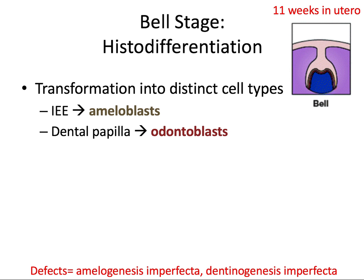Next we have the bell stage, which begins 11 weeks in utero, and there are two phases. The first is called histodifferentiation — histo meaning tissue — and this is where we get differentiation and transformation of those layers into distinct cell types that'll be responsible for secreting our final tooth tissue. The cells of the inner enamel epithelium differentiate into ameloblasts, whereas the cells of the dental papilla differentiate into odontoblasts, all of which are tall and columnar in shape.